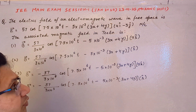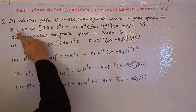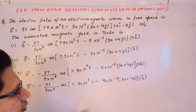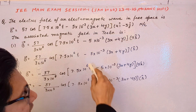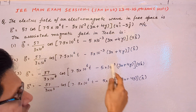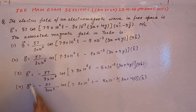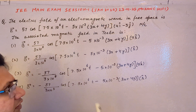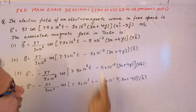This problem is based on the topic of electromagnetic waves. In electromagnetic waves, we know that the electric field wave and the magnetic field wave are perpendicular to each other, and they are also perpendicular to the direction of propagation of the wave. The electric field expression is given and we have to find the magnetic field expression. There is also a relationship between E and B.